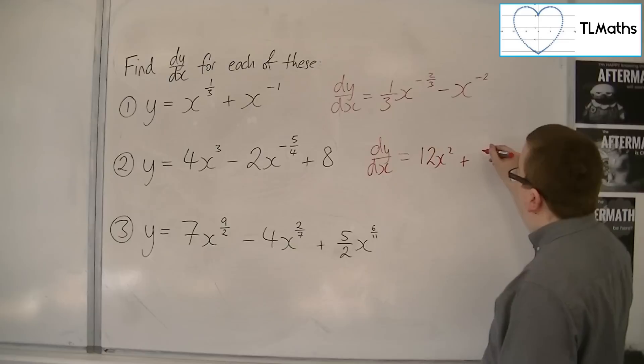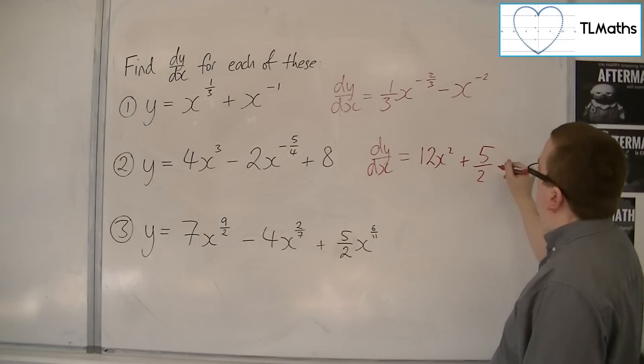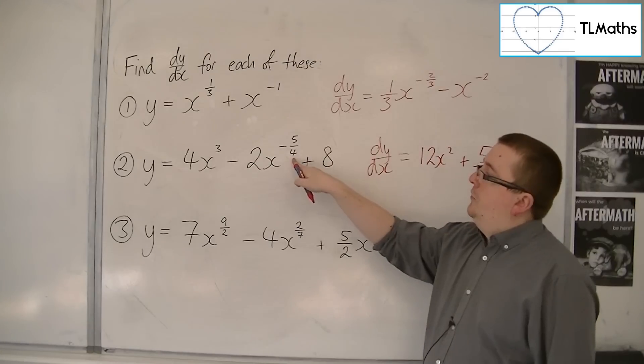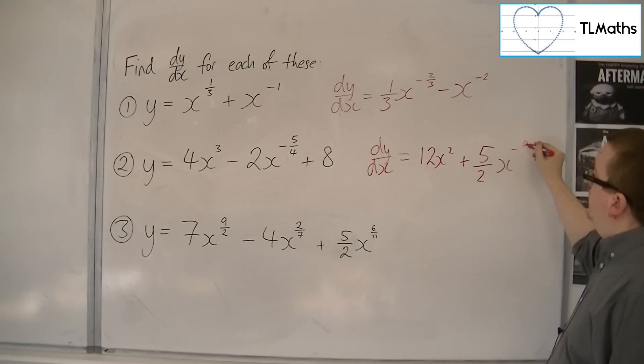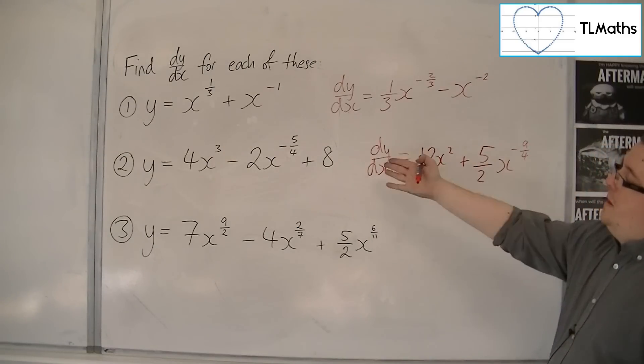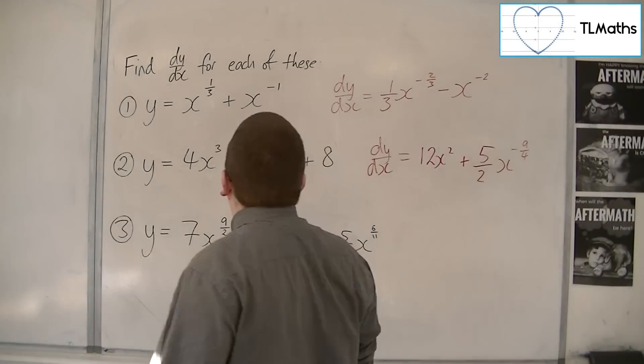Okay, so we've got five halves x, and then we've got to take one off the power. So minus five quarters take away one is actually minus nine quarters. And then we've got that plus eight, which we know differentiates to zero.